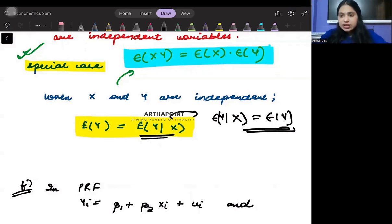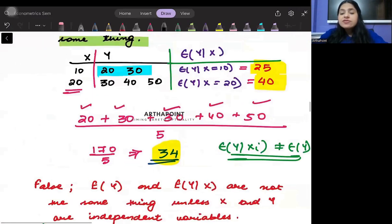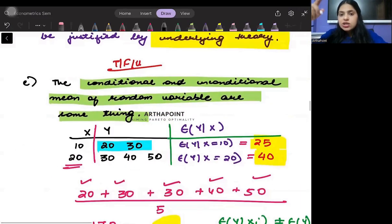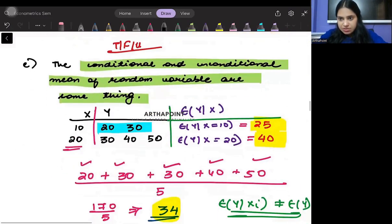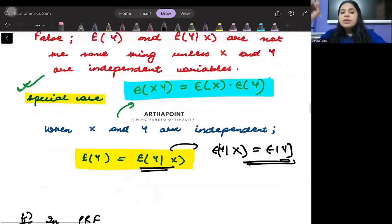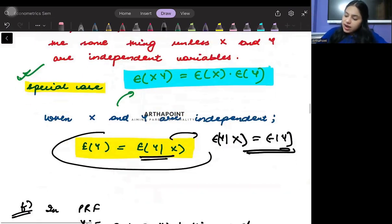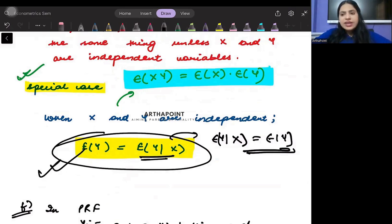So this is a special case. If someone asks you under which scenario will the conditional and unconditional mean be the equal things, they will be equal only when Y is independent of X, and E of Y will then be equal to E of Y given X.